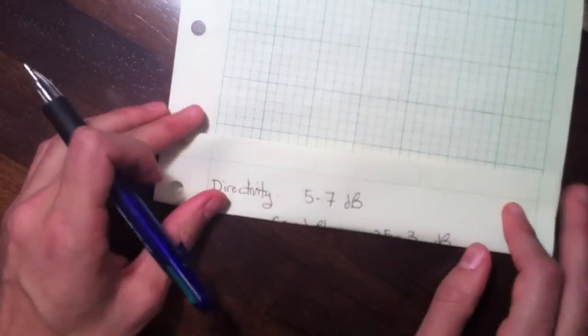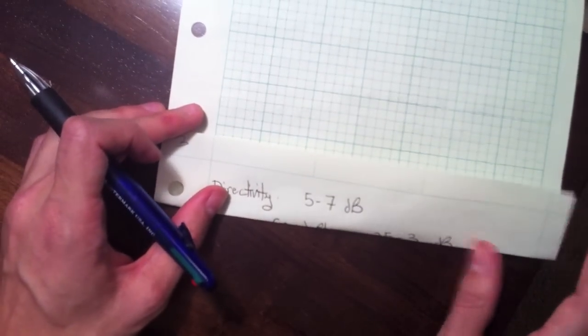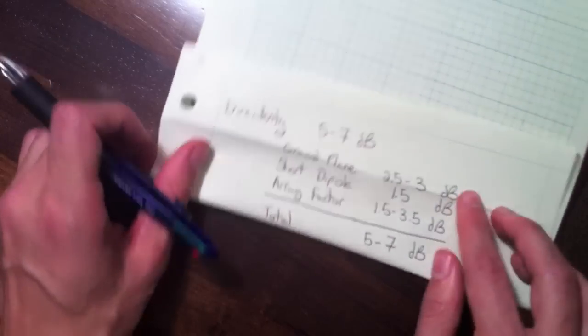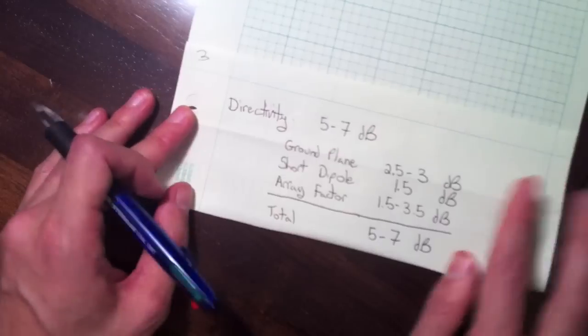So what about the directivity? The directivity for a patch antenna is about 5 to 7 dB. And equations, complicated equations, you can find those in the literature and they're not helpful at all. So it's better to understand intuitively what's going on.